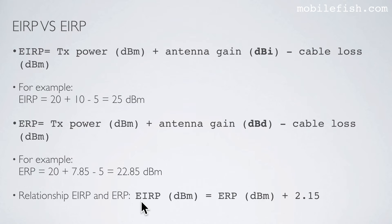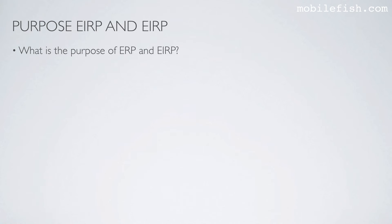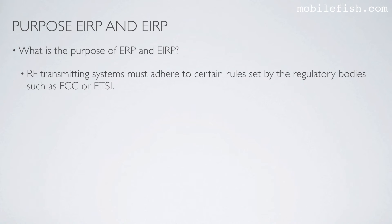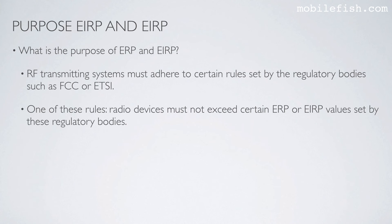The relationship between EIRP and ERP can be expressed by this equation. The purpose of ERP and EIRP is that radio frequency transmitting systems must adhere to certain rules set by regulatory bodies such as the FCC or ETSI. One of these rules is that radio devices must not exceed certain ERP or EIRP values set by these regulatory bodies.